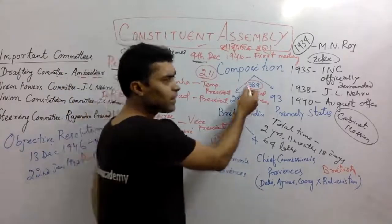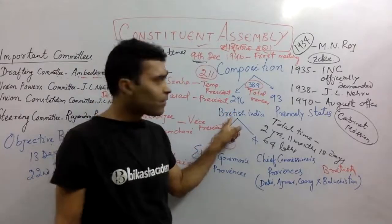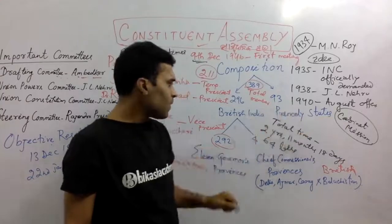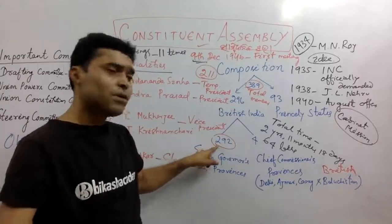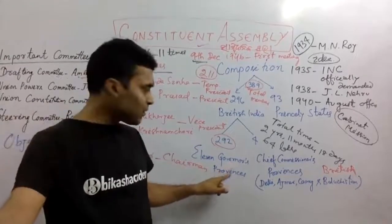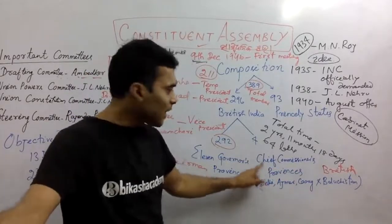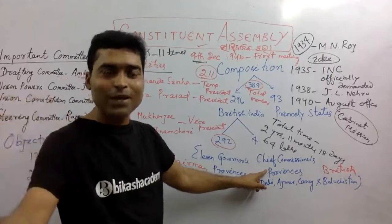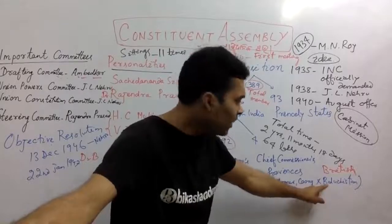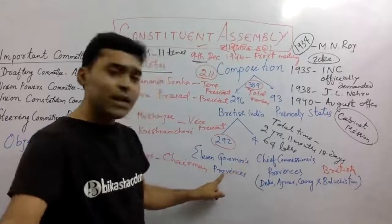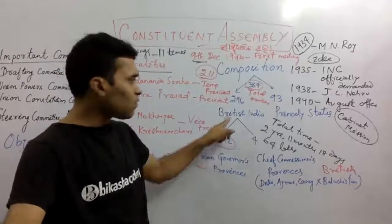There are 389 total members. There are 296 British Indian members and princely state members. In British India, there are 216 general and 215 seats. One category is the governor's province, and there is also the chief commissioner's province. The chief commissioner's province cities include Delhi and others. The total is two hundred.